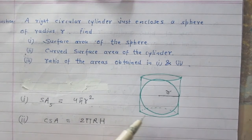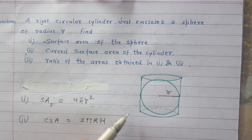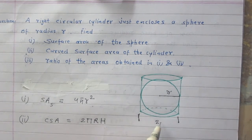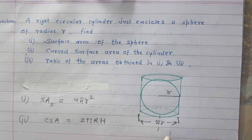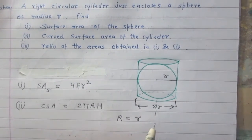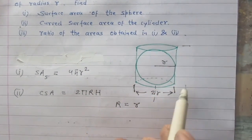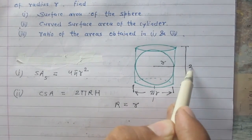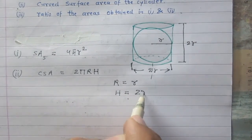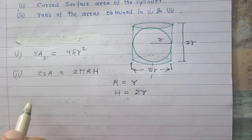This diagram is given in the question. According to this diagram and the information that a sphere is just enclosed, we can say that the diameter of the base of this cylinder is equal to the diameter of the sphere, which is 2R. In other words, the radius of the cylinder equals the radius of the sphere. And the height of the cylinder is also equal to the diameter of the sphere.